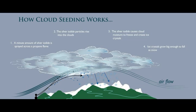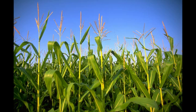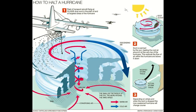It is most commonly done in the mountains or rangelands to increase the snowpack and summer runoff. Rangelands need it done to provide more precipitation for agricultural crops. Cloud seeding is also used to weaken hurricanes and for hail mitigation.